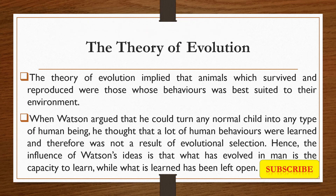The theory of evolution was also one of the factors that led to the rise of behaviorism. The theory of evolution implied that animals which survived and reproduced were those whose behaviors were best suited to their environment. When Watson argued that he could turn any normal child into any type of human being, he thought that a lot of human behaviors were learned. The influence of Watson's idea is that what evolved in humans was the capacity to learn.